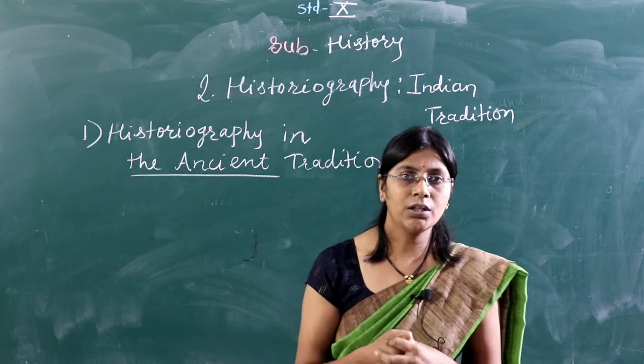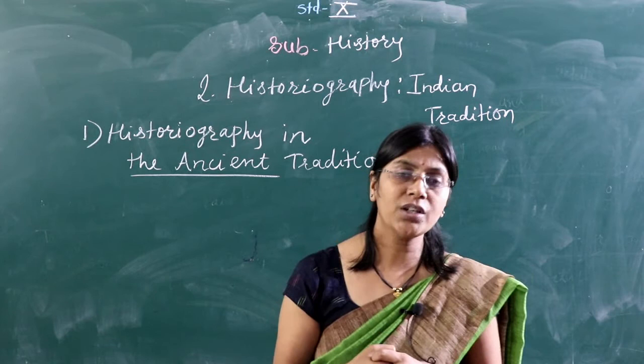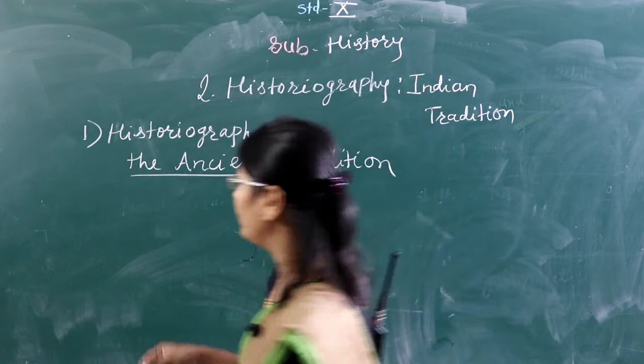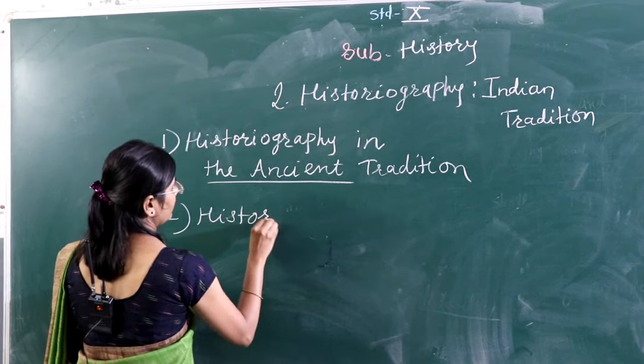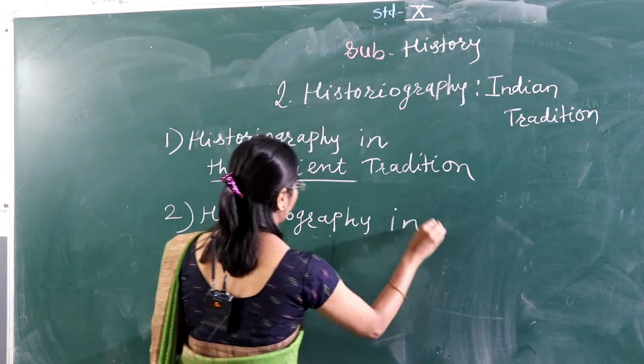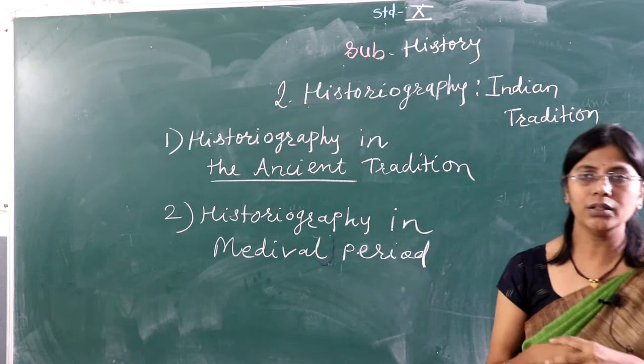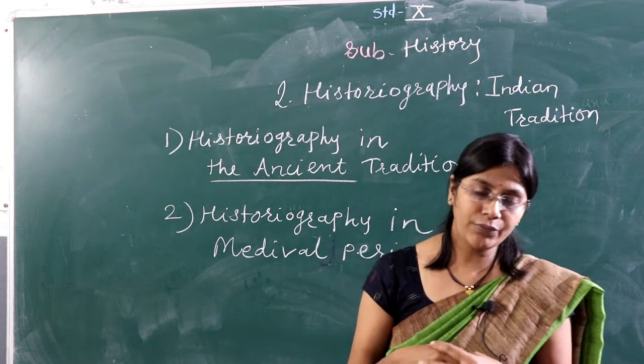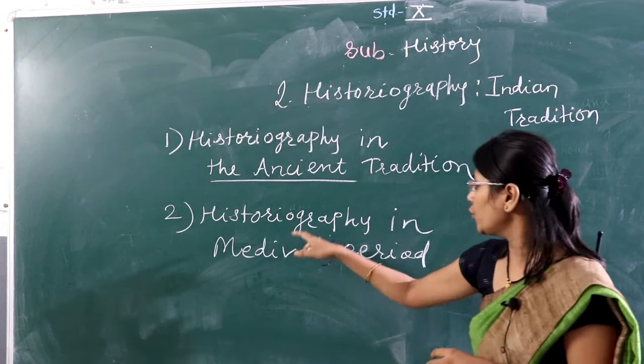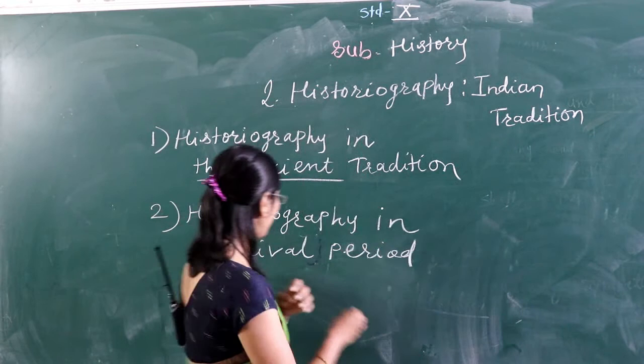I already told you there are three periods. I have already provided information related to ancient historiography — connecting with Mohenjo-daro, Samrat Ashoka, and all ancient kingdoms. Now we will see the historiography in the medieval period, which is the second period.